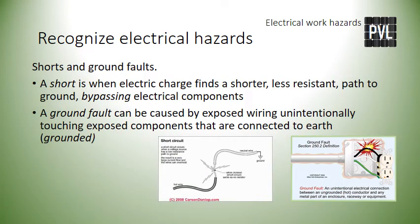A short is when electric charge finds a shorter, less resistant path to the ground. It causes charge to bypass electrical components — this condition develops large amounts of current in wiring or components and can cause dangerous heating or fires. A ground fault can be caused by exposed wiring touching other exposed components that are connected to earth or that are grounded. Ground faults can energize commonly non-energized wires and components, and expose persons to electric charge and shock.